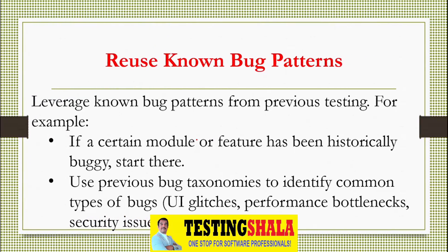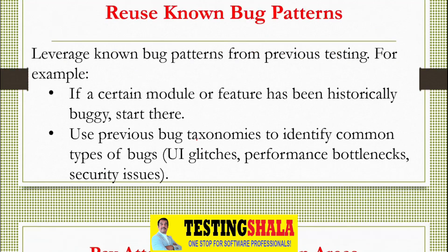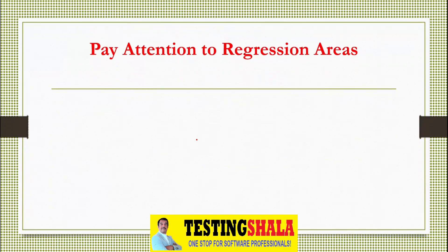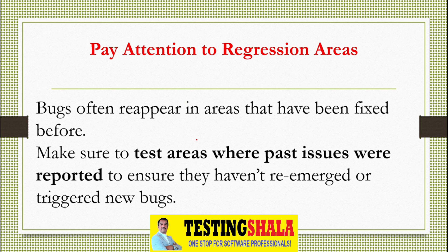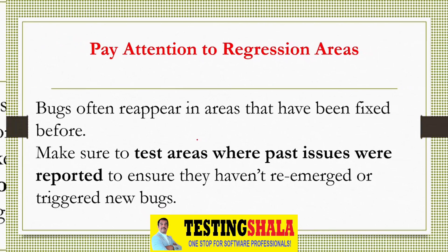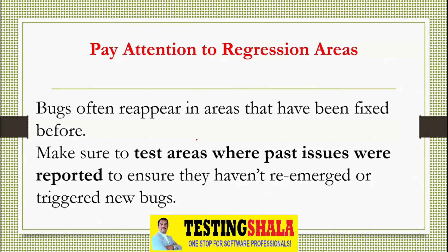The next one is to pay attention to regression areas, because this is very crucial. Whenever we add or modify things in the application, if we pay attention to regression areas, we can definitely find more issues because earlier bugs can pop up again during regression testing.